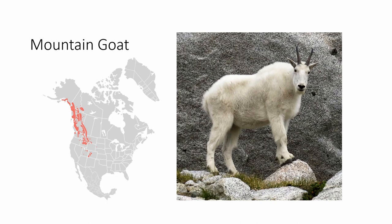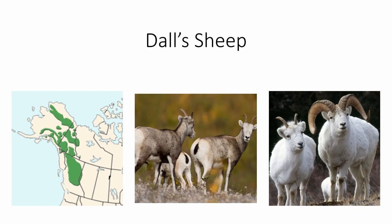The mountain goat is found all over the Rocky Mountains, more so in the northern regions than the southern. It's all white, with horns that stick straight up. Dall's sheep, also known as the thin-horned sheep, is found all over the northernmost part of the Rocky Mountains, from British Columbia up to Alaska. The typical form is entirely white, found in Yukon and Alaska. The stone sheep subspecies, found in British Columbia, is gray with paler spots all over. Note that the male has the big horns and the female has little horns.